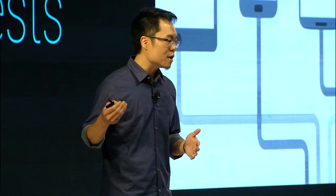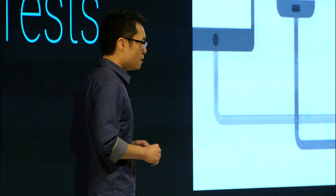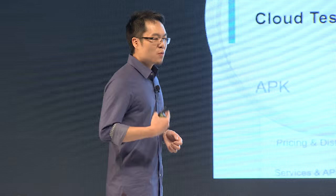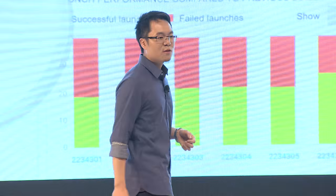Cloud Test Lab lets you run tests in parallel across different languages, device orientations, and Android versions. Doing this is very easy — all you have to do is upload your APK, and with our robo-tests, even if you have not written any test cases, we automatically crawl through the app and capture screenshots, videos, and crash logs for you. We've also worked hard to integrate this into your development workflow and made it accessible through Google Play and Android Studio. When you publish an app through the alpha or beta channel of Google Play, we will automatically run your APK through the Cloud Test Lab to help you catch errors early before it gets broadly distributed.